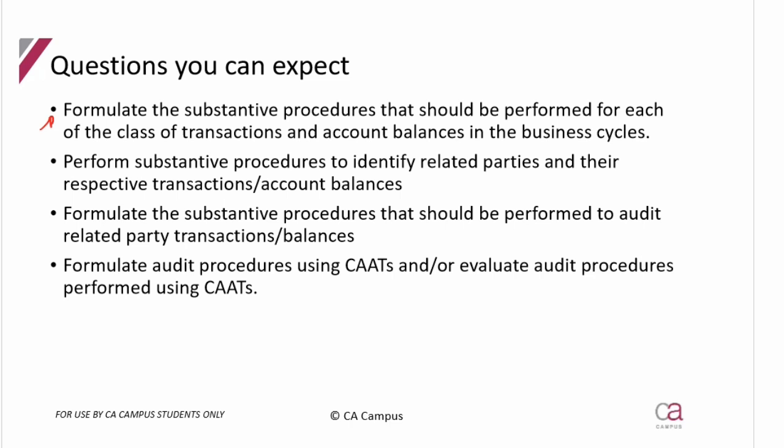Apply the exam technique we've covered, following through with all the options available to assist you with substantive procedures. For related parties, you could be asked substantive procedures to identify related parties and then to audit them — these are separate procedures. One is to identify any missing related parties, and the other is to audit them, where all assertions become appropriate. Formulate all the procedures using CAPS. It is assumed that when they have a computer information system, if you are able to use CAPS, you should include those as your procedures.